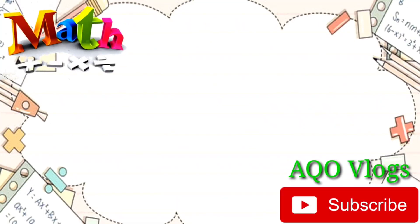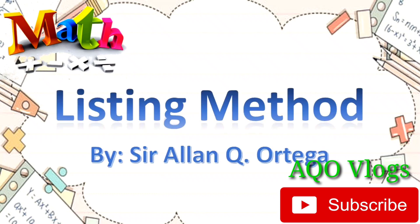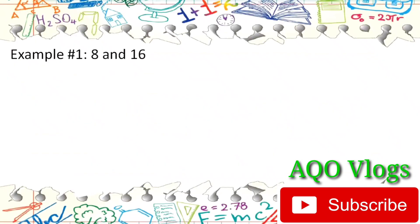Good day everyone. For today's lesson we will be discussing how to use the listing method to get the GCF of a given set of numbers. So let's start. The listing method is a method wherein we list down all the possible factors of the set of numbers.